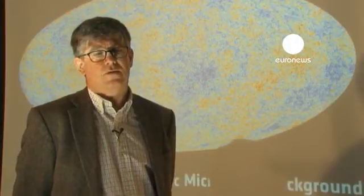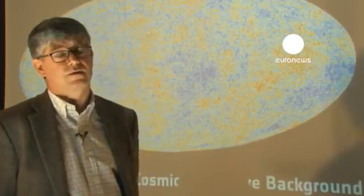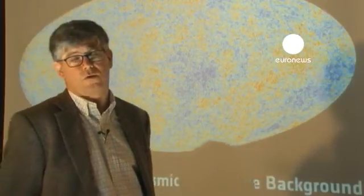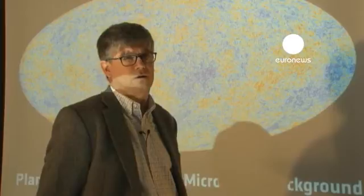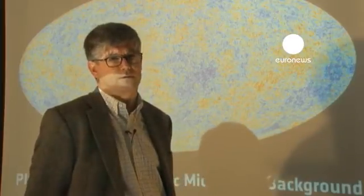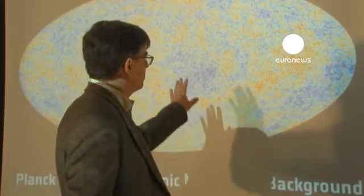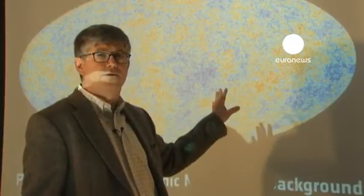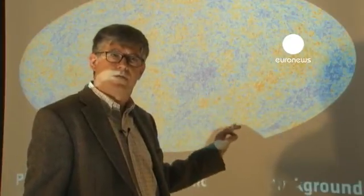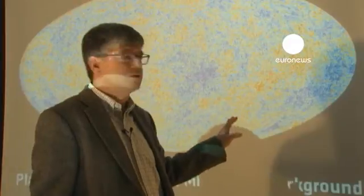What can you see on that? So what you can see here, in fact, is a representation in what we call false colors. So these are not real colors because we can't see microwaves directly. But what we're trying to show in this image are the tiny differences in temperature of the sky from one place to another.